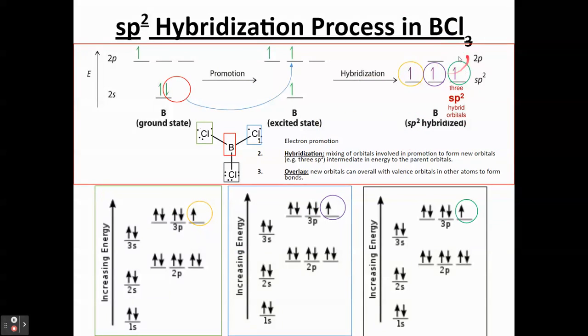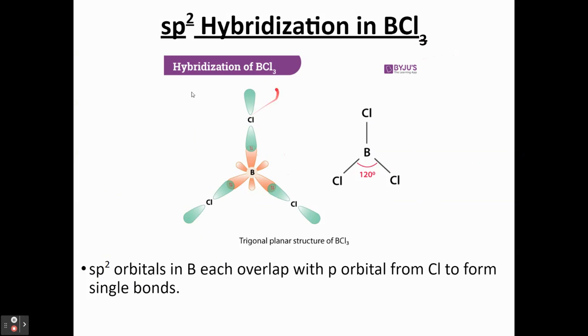And you can explain how the bonding occurs within the BCL3 molecule with it being SP2. And so here you can also draw a balloon representation or an orbital representation diagram, where you can show the SP2 orbitals from the boron overlapping with the single electrons from the chlorine. And you'll show that they have opposite spins.